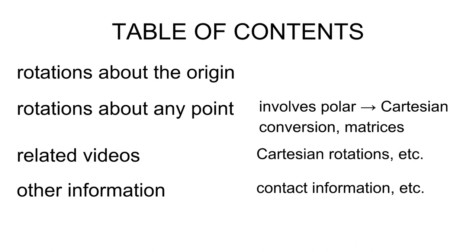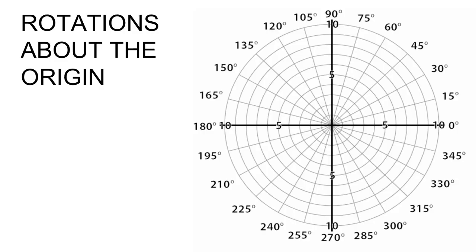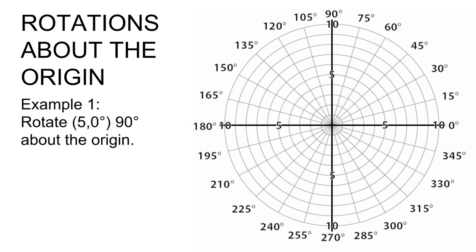Rotation about the origin with polar coordinates is super simple. In fact, I'm just going to show you by example. So for our first example, we're going to rotate the point (5, 0°) 90 degrees about the origin.